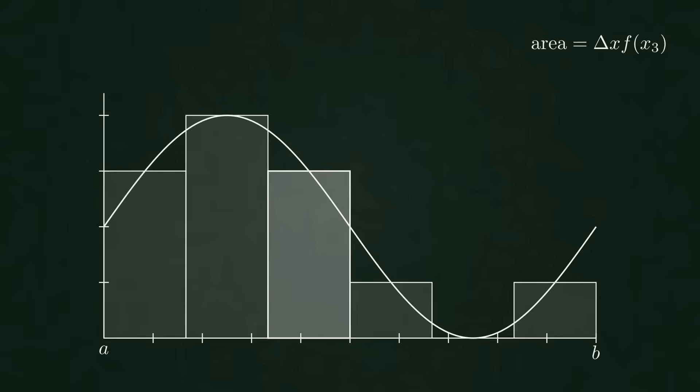So its contribution is delta x times f of x3. Now repeat this for each bar and add the contributions. All bars have the same width. So delta x factors out naturally. On the interval between a and b, that width is delta x equals b minus a divided by 6 currently.